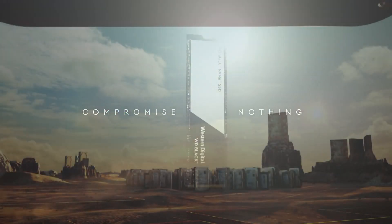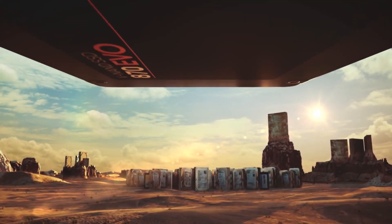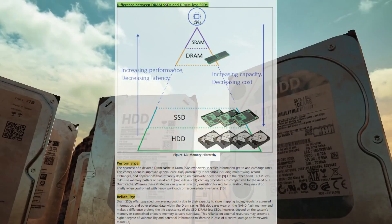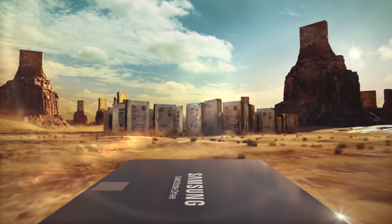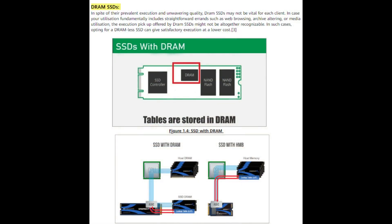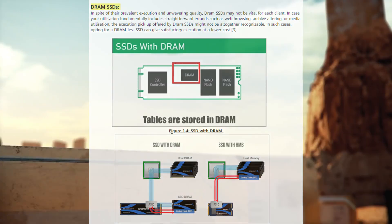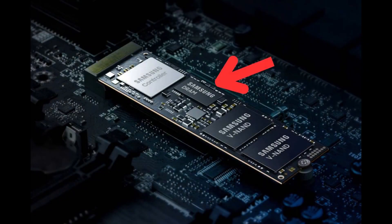The adaptive nature of the DRAM cache allows it to optimize the storage device's performance based on usage patterns. Frequently accessed data is retained in the cache for easy access, which can decrease loading times for applications that you alternate between regularly. You can tell if your SSD has a DRAM cache by physically inspecting it or checking its specifications.